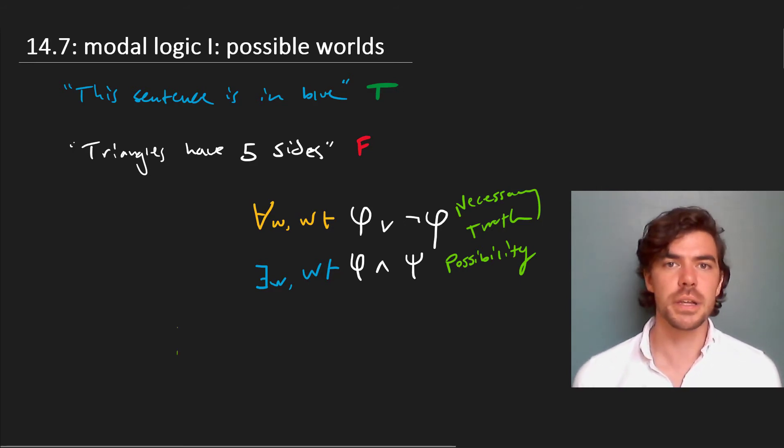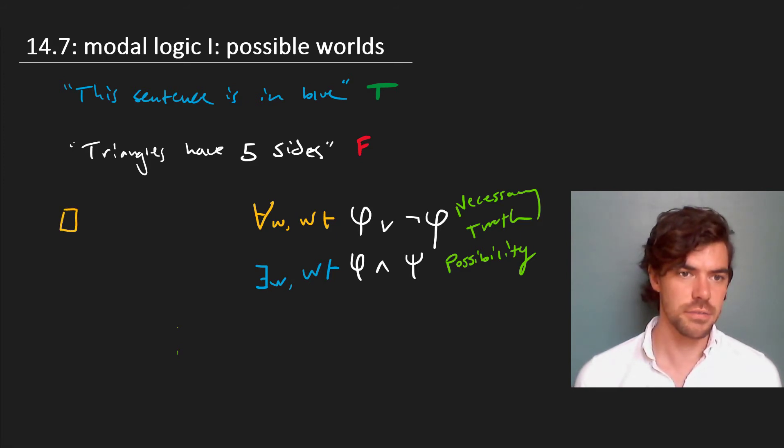The way this is typically written is with a new operator, the box for necessity and the diamond for possibility. These range over sentences: phi or not phi in the case of the first, and phi and psi in the case of the second.